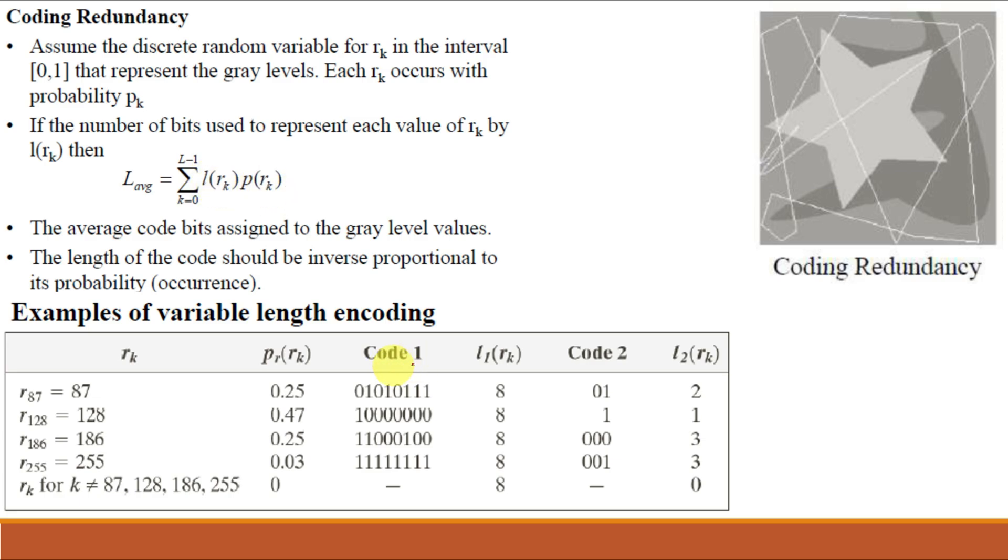Here code 1 is the fixed length code as fixed 8 bits are used. So L_avg for code 1 will be L_avg = 8 × Σ(k=0 to L-1) p(r_k). Since 8 is constant, it comes out, and we know that the sum of p(r_k) equals 1 as total probabilities sum to 1. So 8 × 1 = 8.